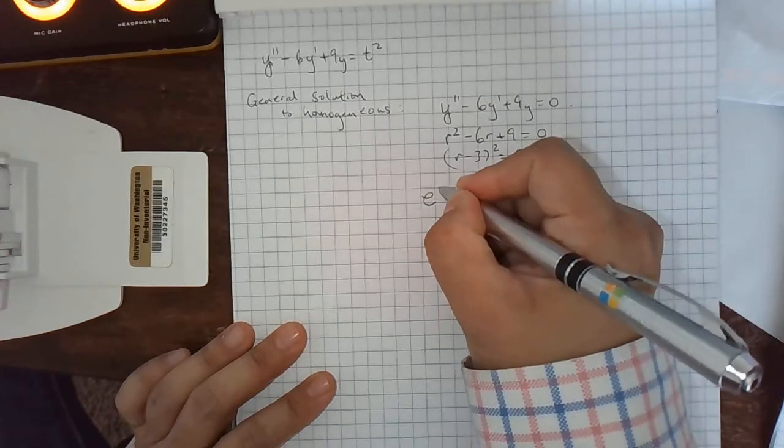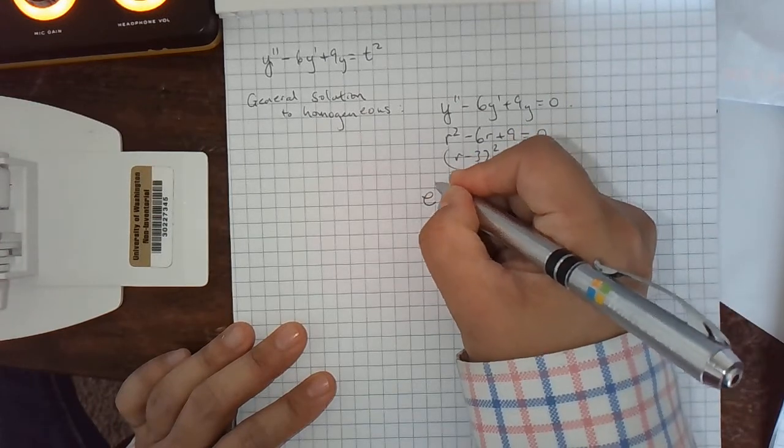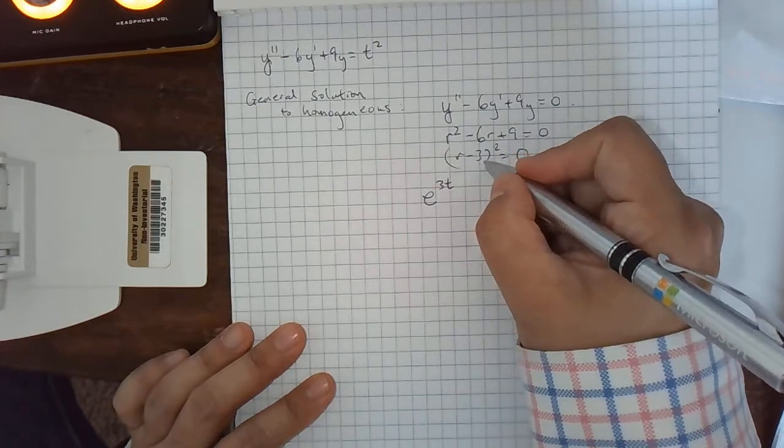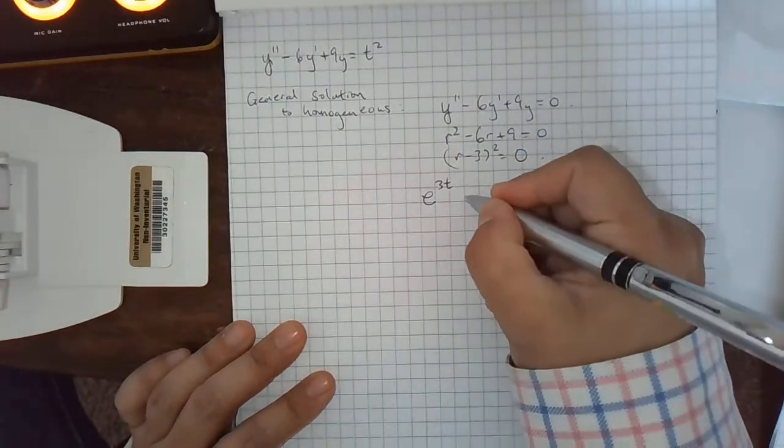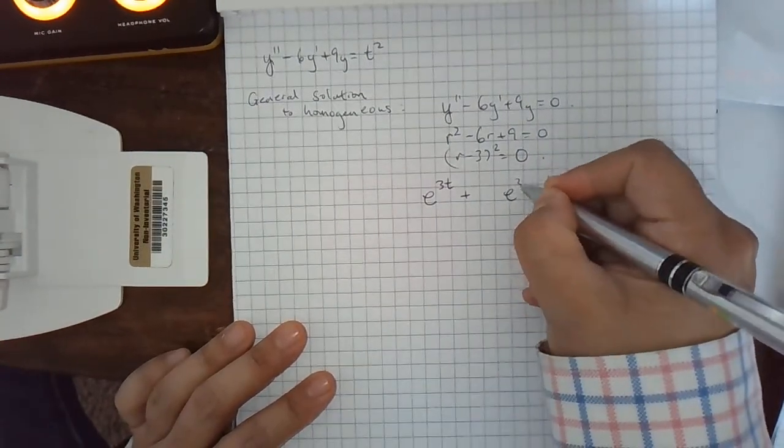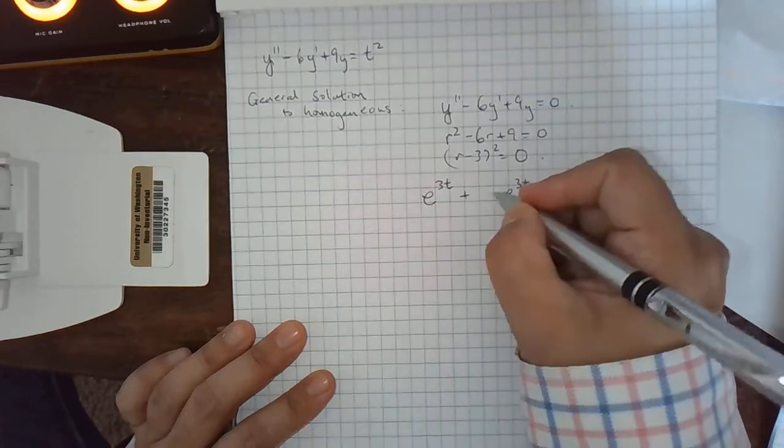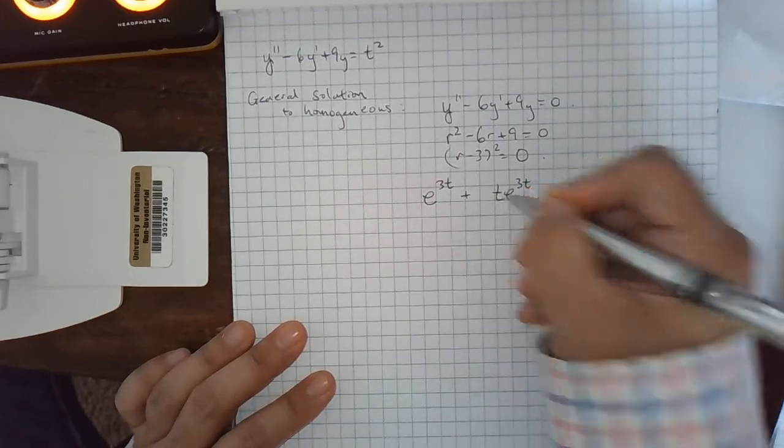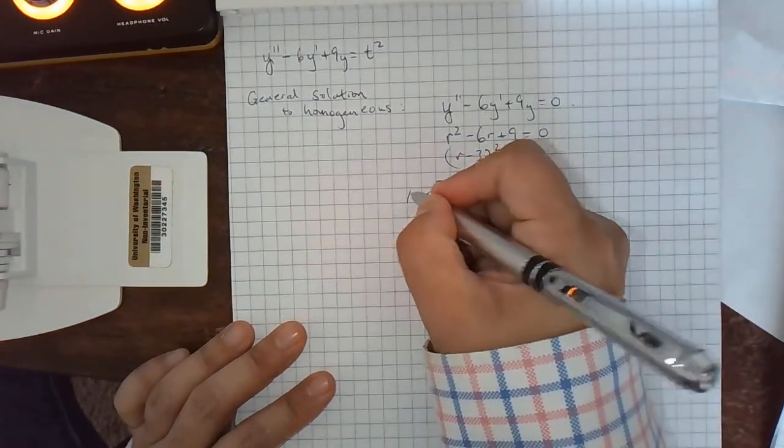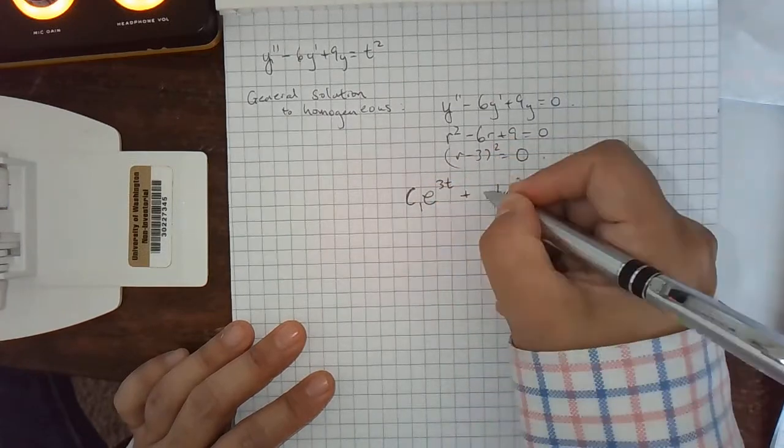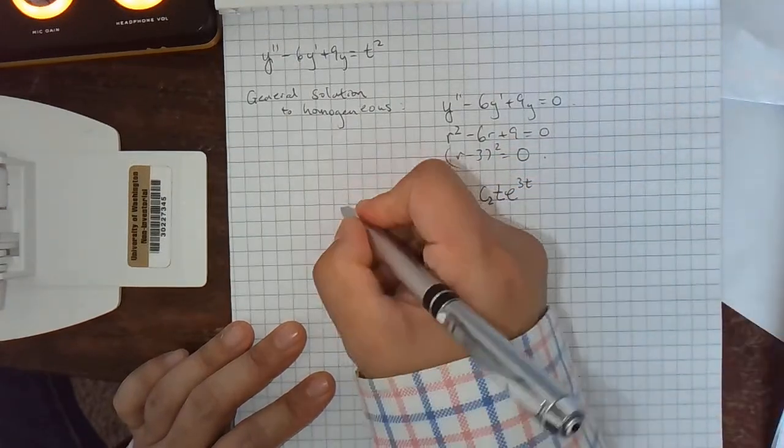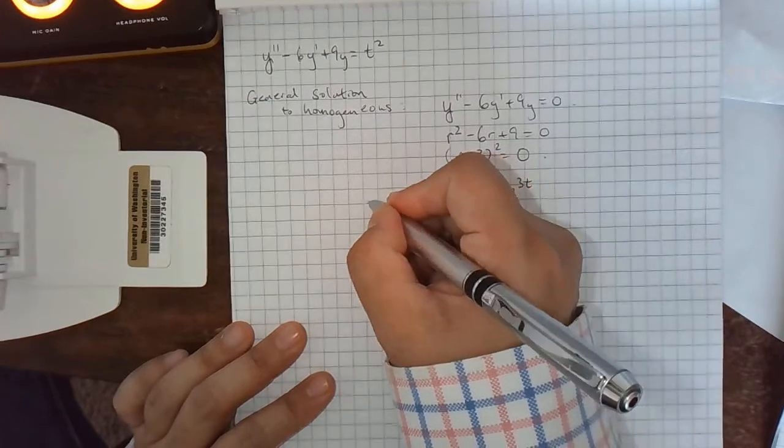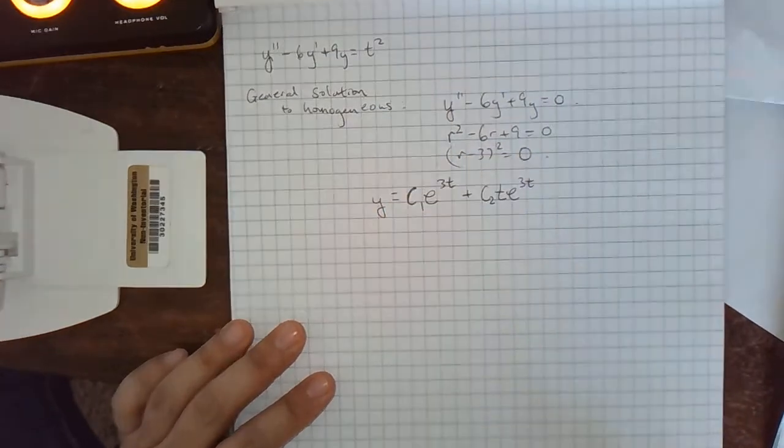And we did a bunch of work the first time, but remember, we can just write down the general solution. So usually we put the root in the exponent. So the root is 3, and we would have the same root in the other exponent, but that's not going to introduce anything new. So we put a t in front of one of them, and then they both have constants. So we'll call them c1 and c2. So this is the general solution to the homogeneous equation.